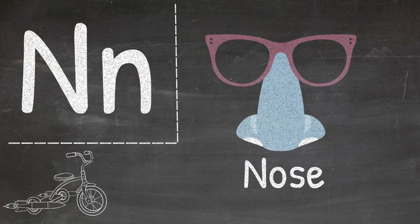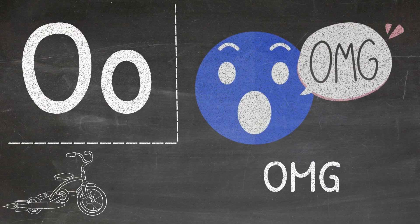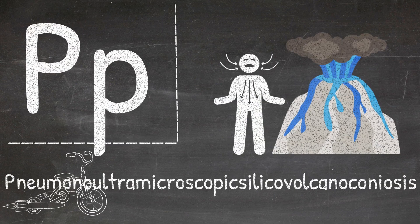M is for monkey, N is for nose, O is for omg, P is for pneumono ultramicroscopic silicovolcano coniosis.